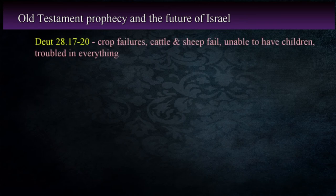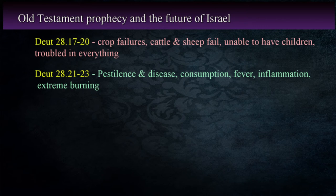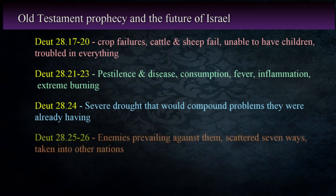Deuteronomy 28:17-20: they would be met with failures in their crops, their cattle and sheep would fail, their ability to have children would fail, and they would be troubled in everything they did. Deuteronomy 28:21-23: pestilence and disease would come upon them — Moses describes these as a consumption, fever, inflammation, and extreme burning. Deuteronomy 28:24: their land would experience severe drought that would compound the problems they were already experiencing. In Deuteronomy 28:25-26: their enemies would prevail against them, and instead of one of the children of Israel putting a thousand of their enemies to flight, they would be scattered seven ways and eventually taken out of their land into all nations.